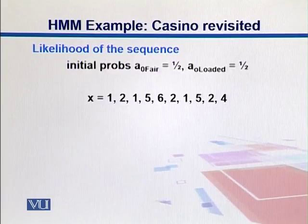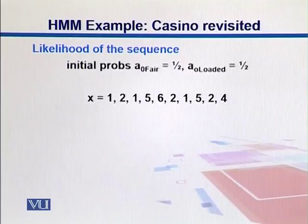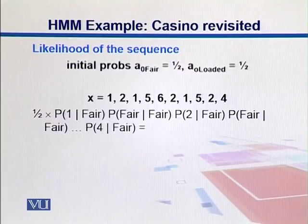So we start with the initial probabilities. Starting in fair is half, starting in loaded is half and this is our sequence coming from those alphabets 1 through 6 and what we are interested in is that everything is fair.